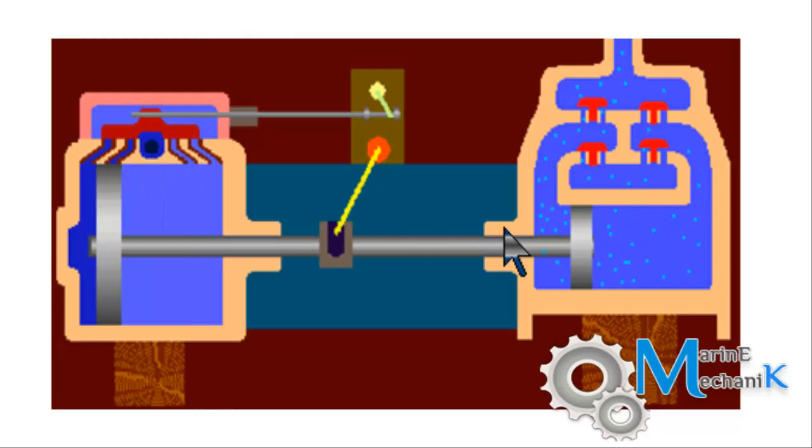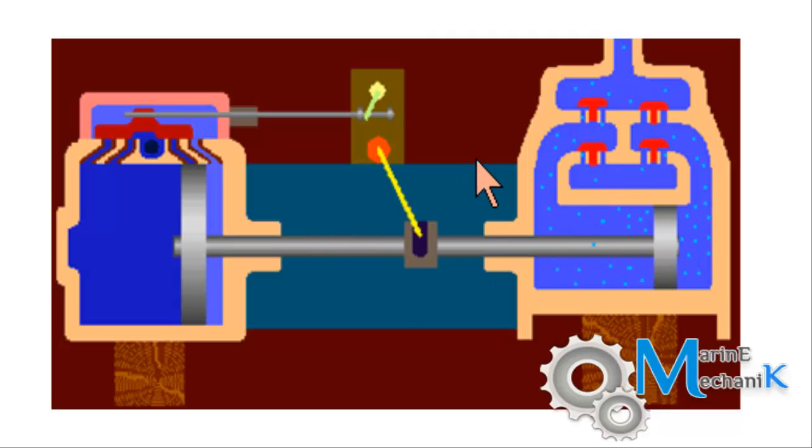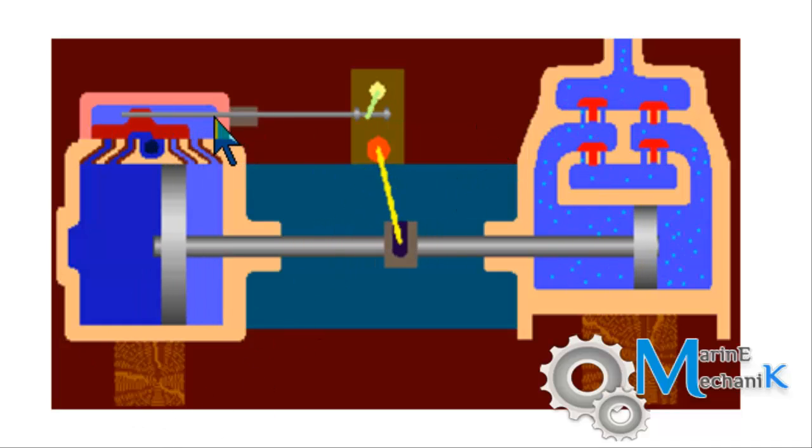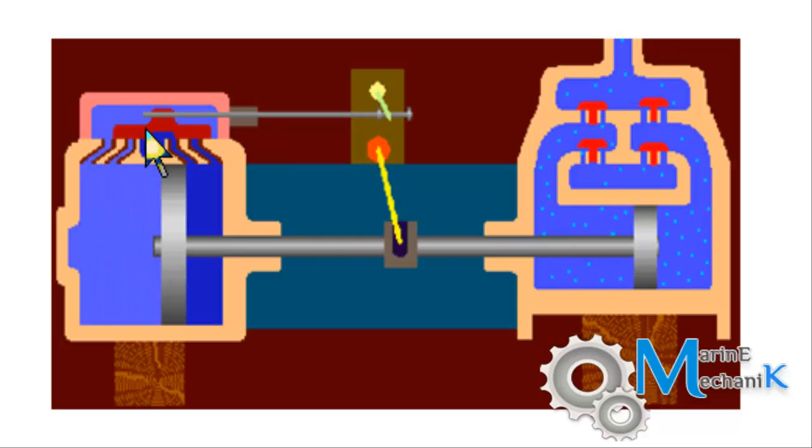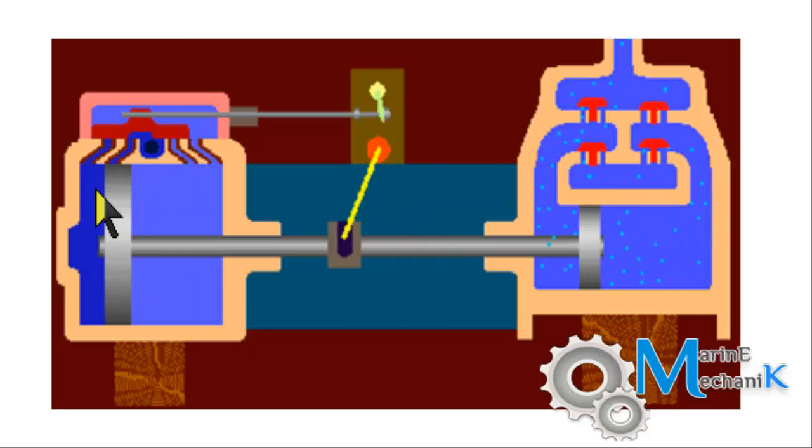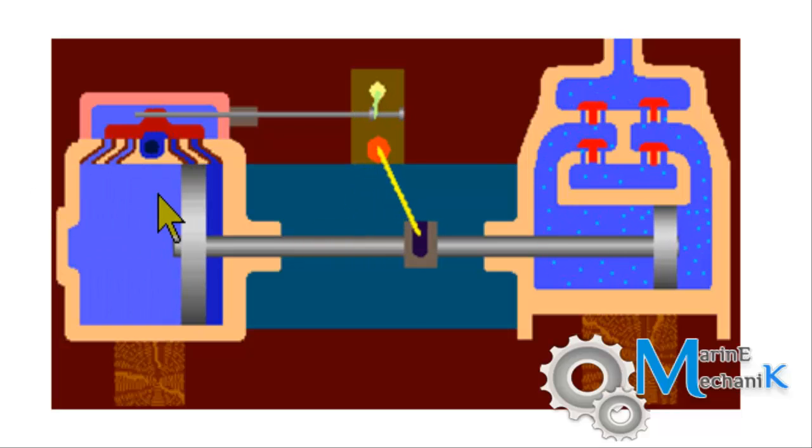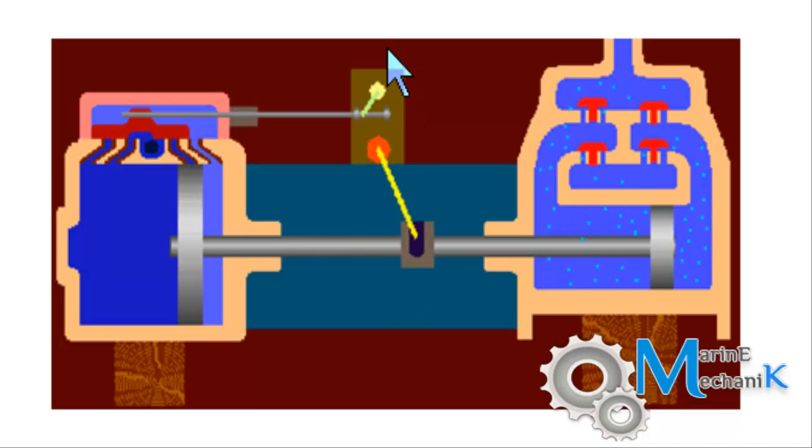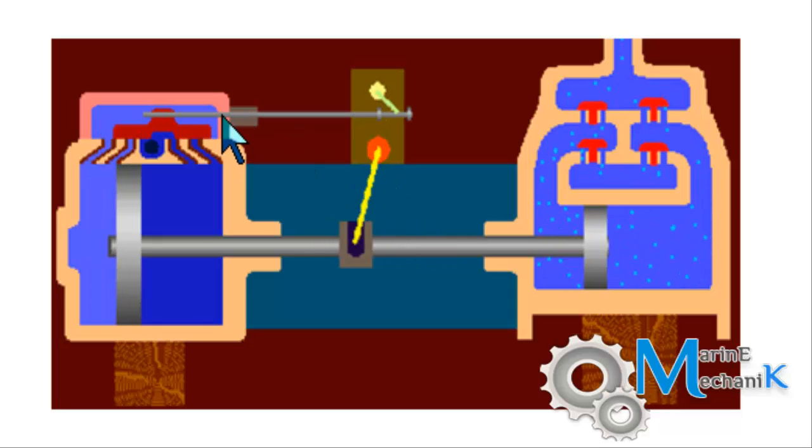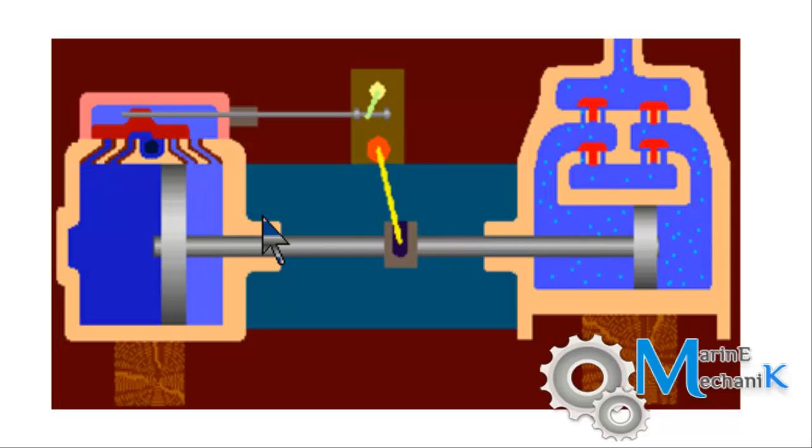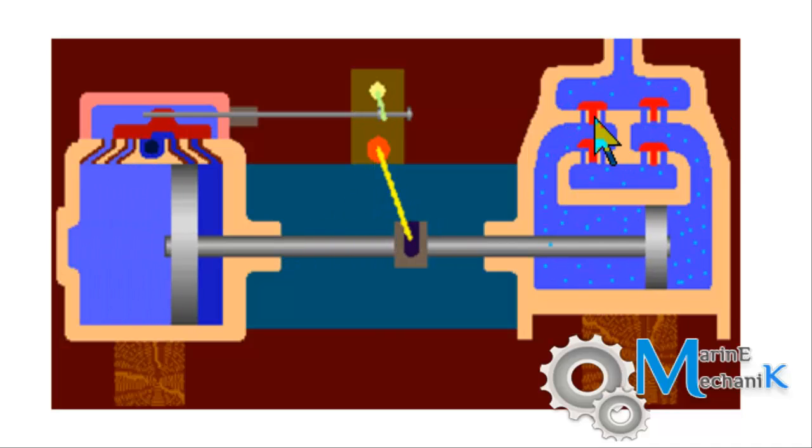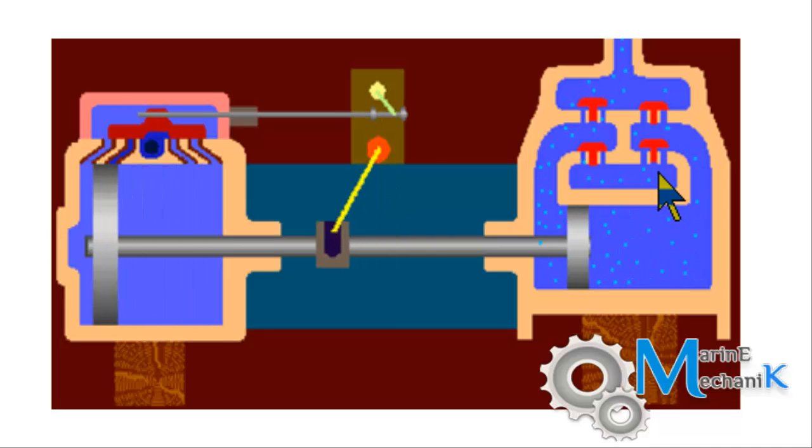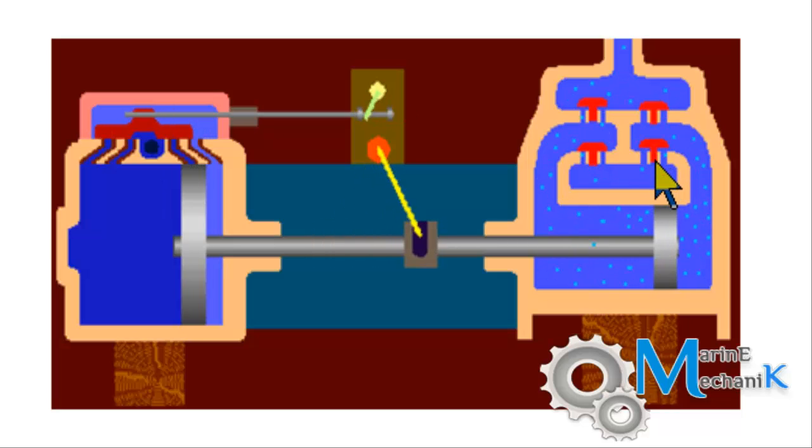That's the steam operated reciprocating bilge pump which you can find it on olden day steam ships. Here is the steam chest where the steam pilot valve controls the inlet and outlet of steam on top of the piston and bottom. This is a double-acting steam piston, and here is the crosshead mechanism which drives the pilot valve over here. Thus the steam is diverted on top and bottom of the system alternately. This is the suction valve chest.